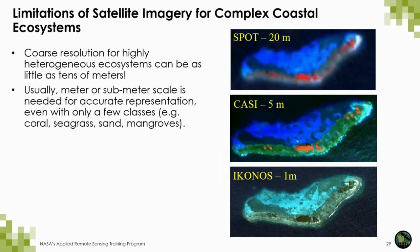There are limitations for satellite imagery for complex coastal ecosystems, mostly in terms of spatial resolution. Here are images from different sensors: from SPOT at 20 meter resolution — really blurry and hard to differentiate components — to CASI at a much higher spatial resolution of about 5 meters, where you start seeing some benthic features, and here is with Ikonos at 1 meter resolution of the same reef. Now you can see typical components of this particular area: sandy areas, seagrass beds, some corals, even mangrove forest and a beach.